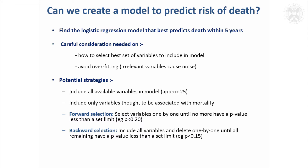There's also backward selection, where you put all the variables in to start with, then delete them one by one in decreasing order of p-values — removing the one with the largest p-value, refitting, then removing the next, until all remaining p-values are below a set limit. Again, that limit doesn't have to be 0.05 and doesn't necessarily have to reach the level of statistical significance.